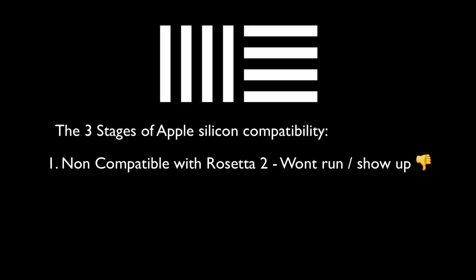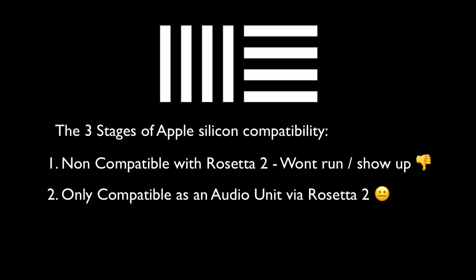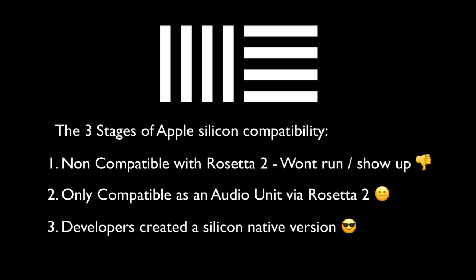There are three levels of M1 compatibility that each separate plugin developer is at. First, there isn't a Rosetta compatible version at all, so it doesn't even show up on your computer or it doesn't run. Two, the plugin will work but it needs Rosetta 2. Or three, the developers created a silicon native version of the plugin. Fortunately, most devs are at least at stage two, meaning you can run the universal build of 11.1 but still use Rosetta 2 to bridge their audio units.